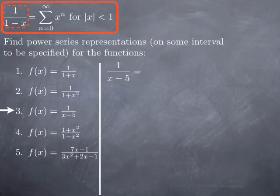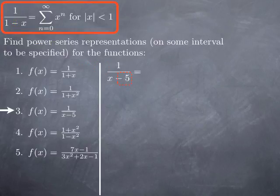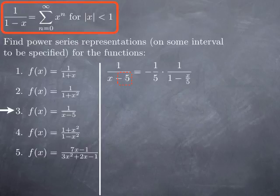Now in the third case, we don't have 1 over 1 plus or minus something directly. However, we have a constant at the bottom, so we can factor it out to obtain a 1. Specifically, if I factor negative 5 at the bottom — really factoring out negative 1 fifth — I get 1 when I factor it out of negative 5, and negative x over 5 when I factor it out of x. So I can rewrite 1 over x minus 5 as negative 1 fifth times 1 over 1 minus x over 5.